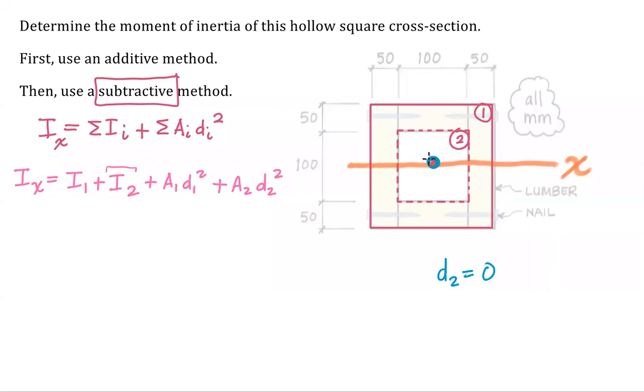And the center of shape one lies on the centroidal axis, x axis. So d one is equal to zero as well. So this is kind of your holy grail. All of these component areas that have a centroid that lies on the axis you're interested in for us the x axis. Those terms go away. So now we can start to simplify this.